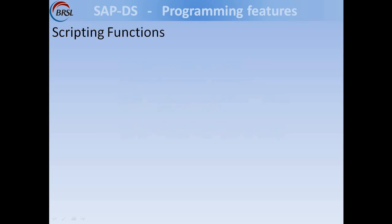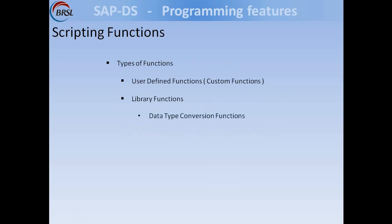Now let us see the functions available in scripting. There are two types of functions: user-defined functions and library functions. User-defined functions are custom functions created by the developer, while library functions are predefined functions developed by SAP. There are many categories of library functions, including data type conversion functions, numeric functions, string functions, date functions, aggregation functions, and others.